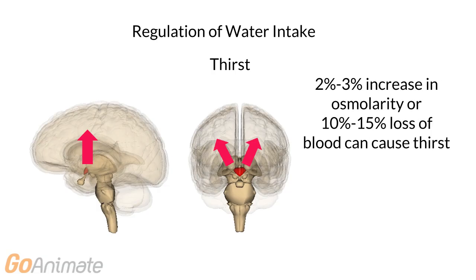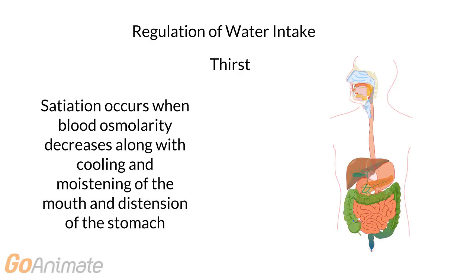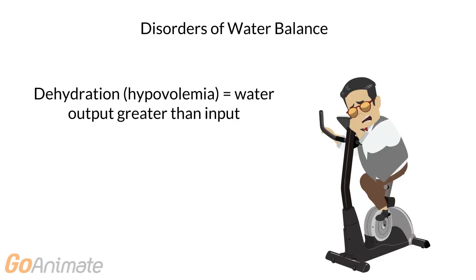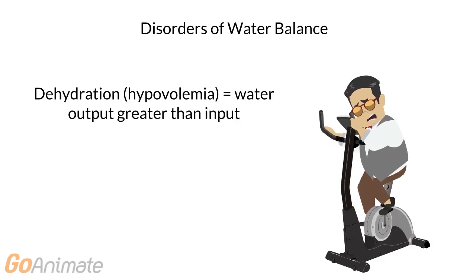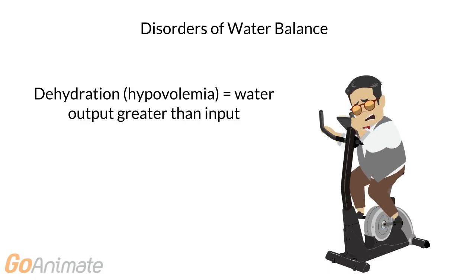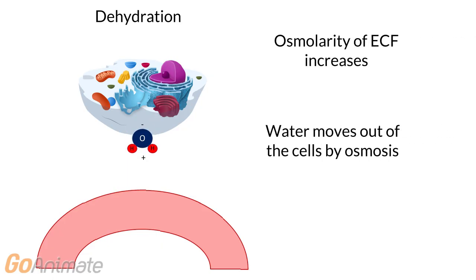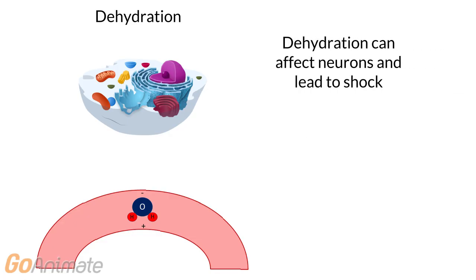Only a 2-3% increase in osmolarity can produce thirst. A 10-15% loss of blood can also produce thirst. Satiation occurs when the blood osmolarity decreases along with cooling and moistening of the mouth and distension of the stomach. A disorder of water balance is hypovolemia, or dehydration. This occurs when the output of water exceeds the input. The concentration, or osmolarity, of the extracellular fluid increases, drawing water out of the cells by osmosis. Severe dehydration can affect many cells of the body, including the neurons, and lead to shock.